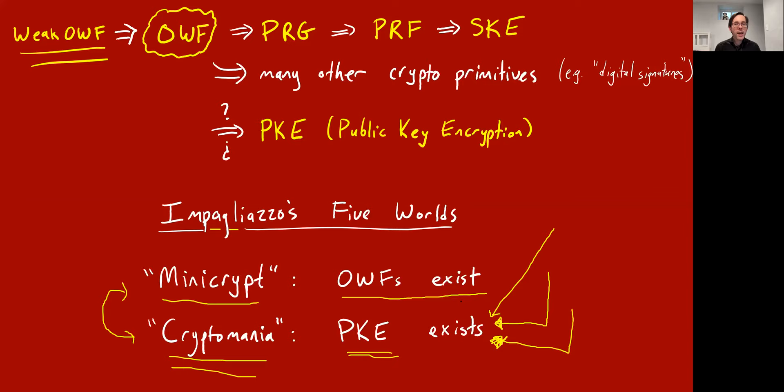Unless we come up with some different way to achieve public key encryption that does not rely on hardness of factoring. This is a very popular area of study — post-quantum cryptography. We in fact do have candidates for public key encryption that are not broken by any known quantum algorithms, so maybe we still believe we live in cryptomania despite the fact that RSA is broken with quantum computers.